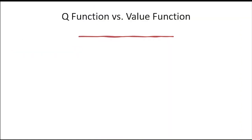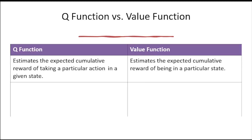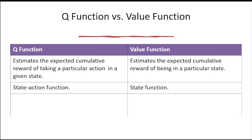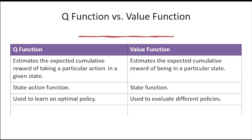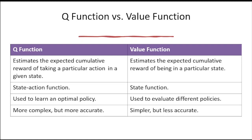Now for a comparison of both functions: the Q function and the value function are both used to estimate the expected cumulative reward, but they do so in different ways. The Q function takes both the state and the action as input, while the value function only takes the state as input. This means the Q function can be used to learn an optimal policy, while the value function can only be used to evaluate different policies. The Q function is more complex but can also be more accurate, whereas the value function is simpler but less accurate.